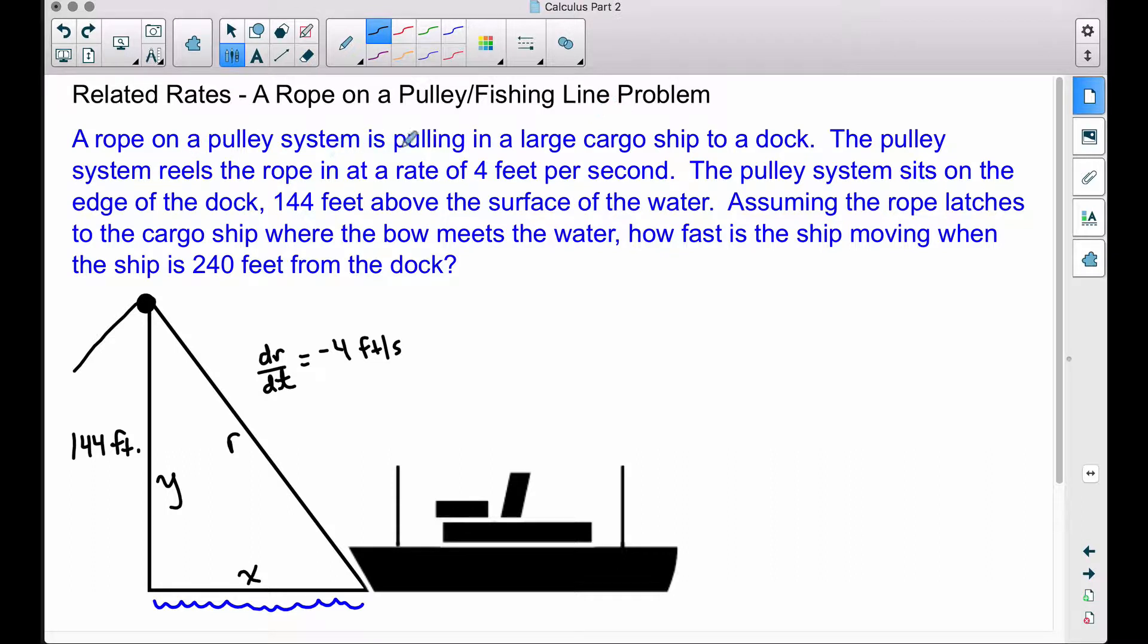A rope on a pulley system is pulling a large cargo ship to a dock. The pulley system reels the rope in at a rate of 4 feet per second. The pulley system sits on the edge of a dock 144 feet above the surface of the water. Assuming the rope latches to the cargo ship where the bow meets the water, how fast is the ship moving when the ship is 240 feet from the dock?